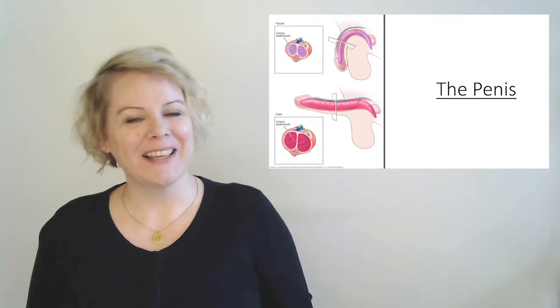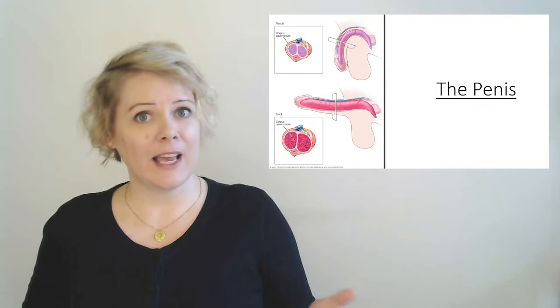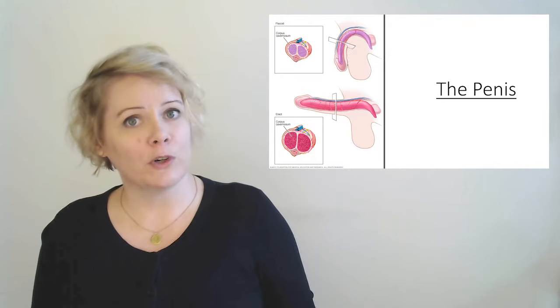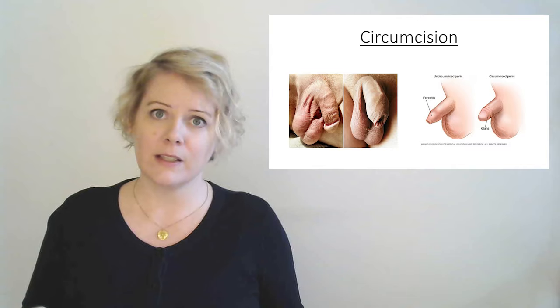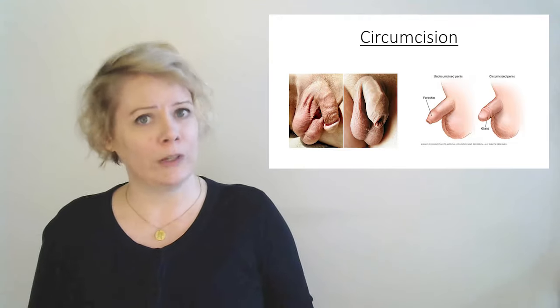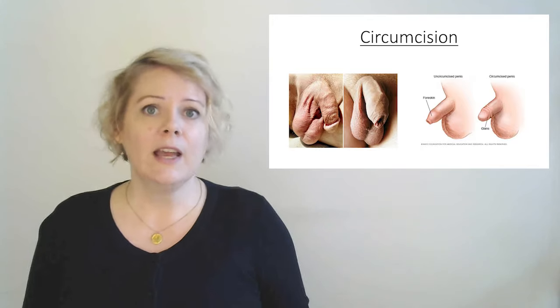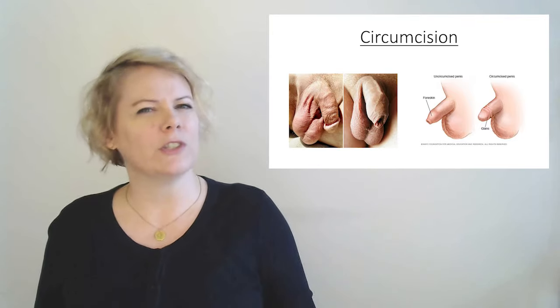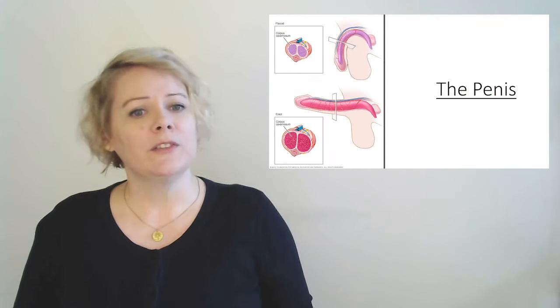It does get slightly more complicated than that, but basically what you need to know is that there are two parts on the outside. The shaft is the long part that sticks out and the head is the part at the very end. The head is the most sensitive part of the penis. That's where most of the nerve endings are collected and that's why penises come equipped with their own hood so that you don't get too much stimulation from the nerve endings.